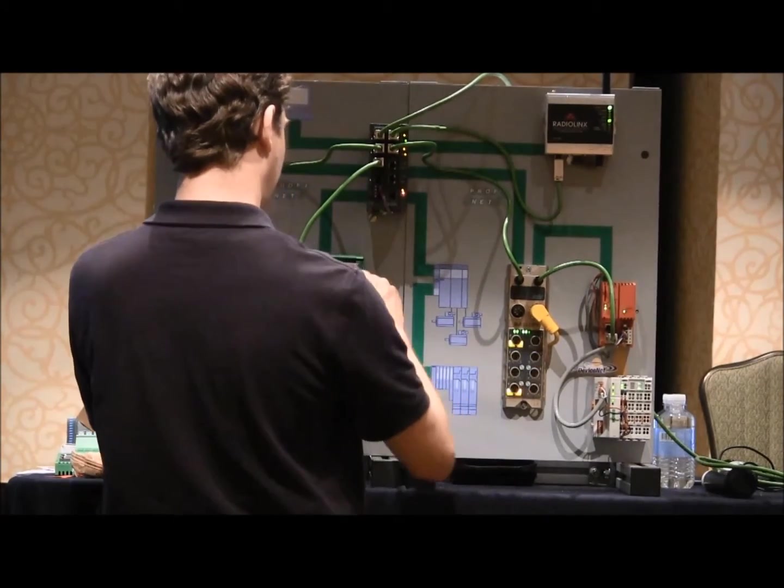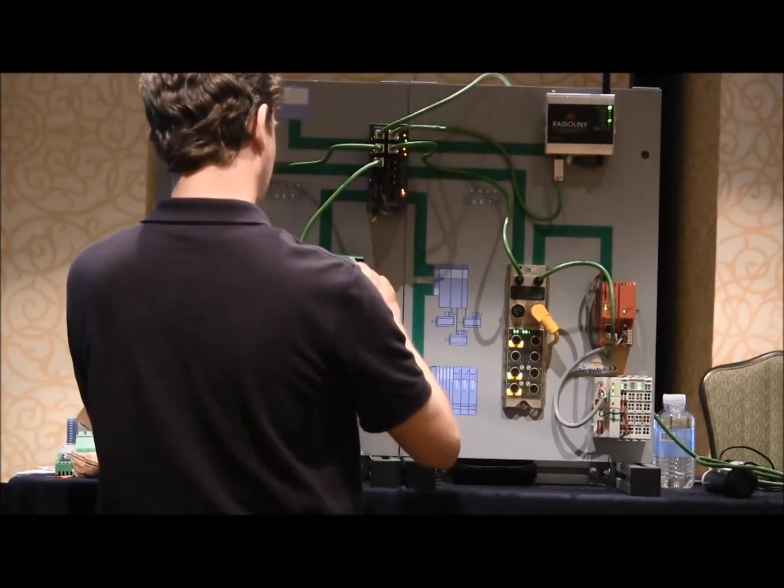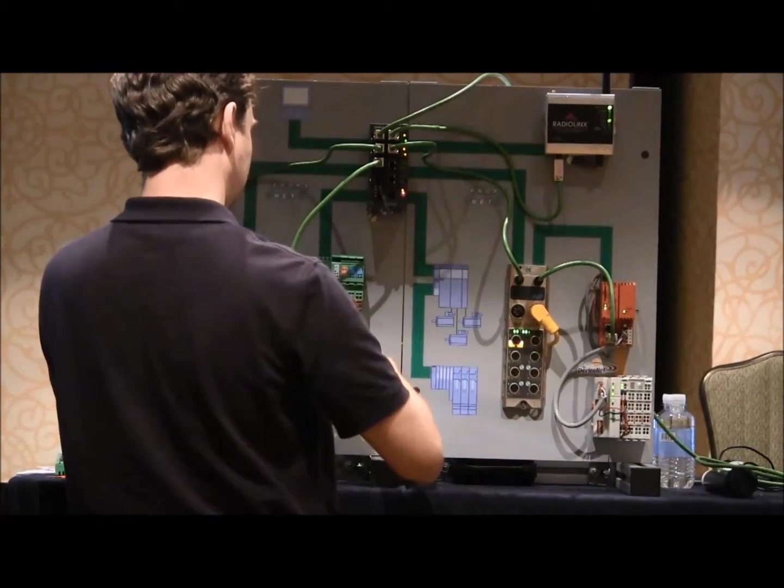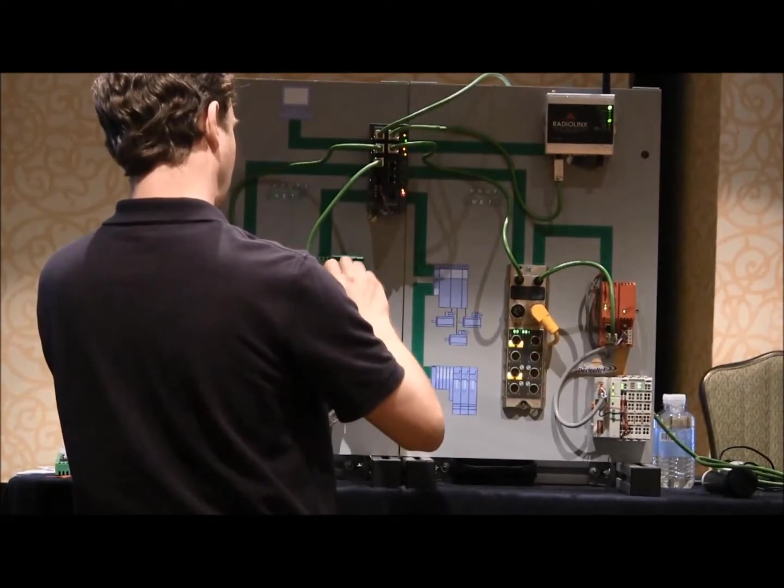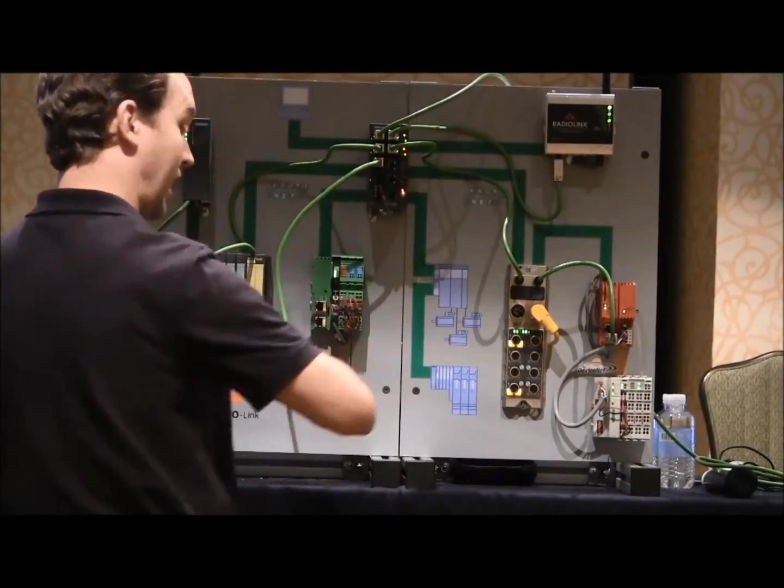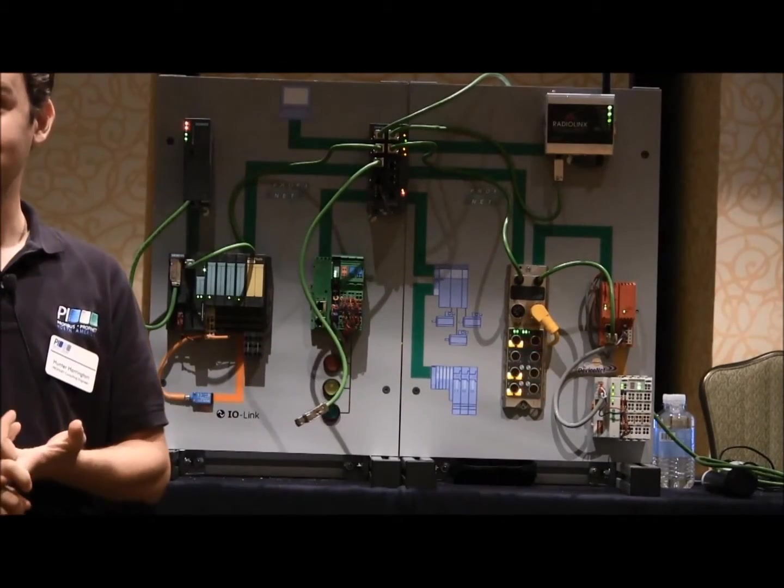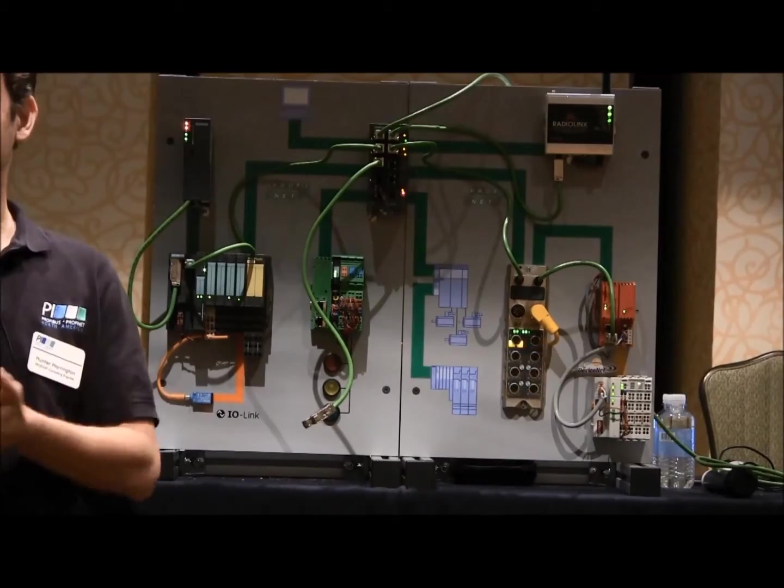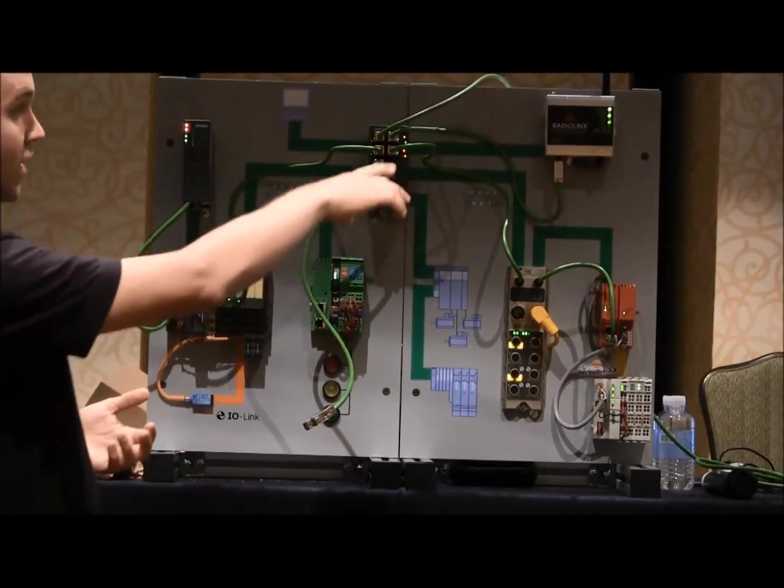It's going to start talking LLDP and its neighbor is going to start talking LLDP. The controller is going to figure out that this device is out there now and it's going to go ahead and assign not only its name but also its IP address because we've set up a simple device replacement feature.